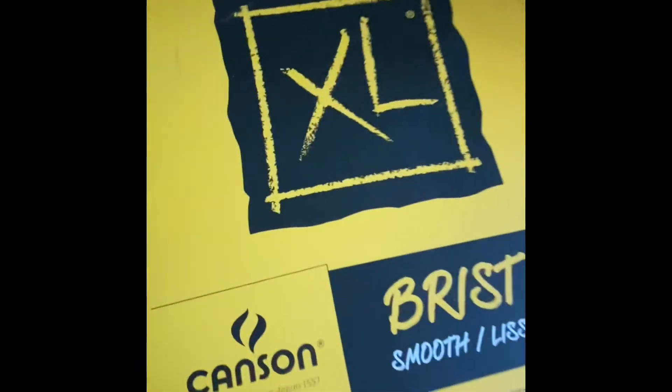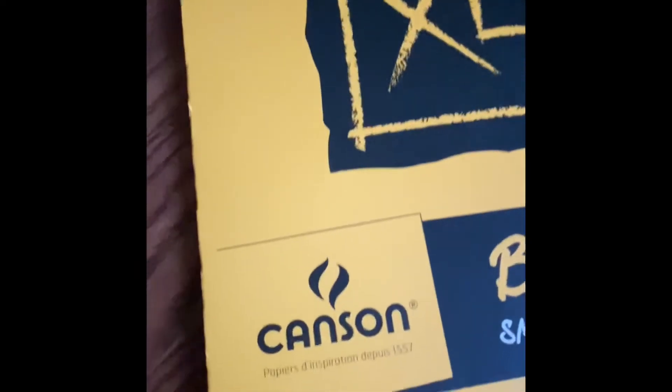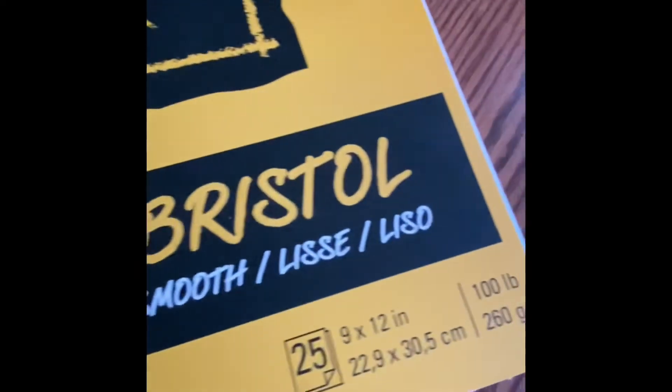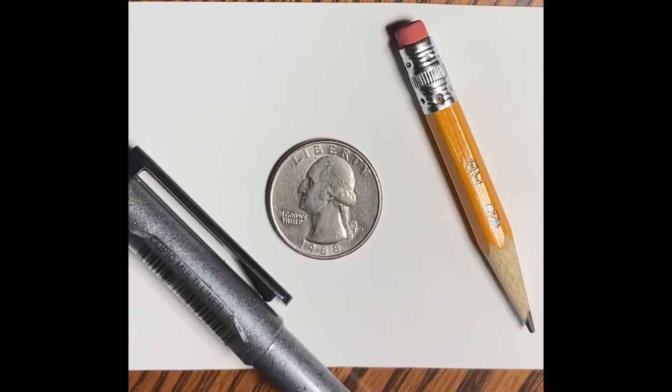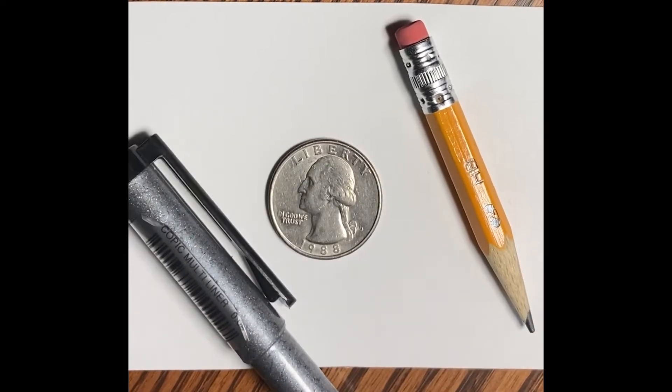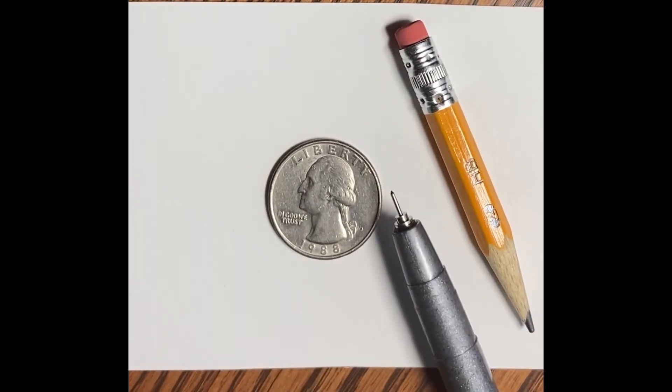I use acid-free Canson XL Bristol smooth 100 weight paper, with a couple pieces already cut down to size. There's a quarter and a pencil for scale. I'll get started with the facial features as I usually do, which is easier here because there's not much showing on Snoopy.